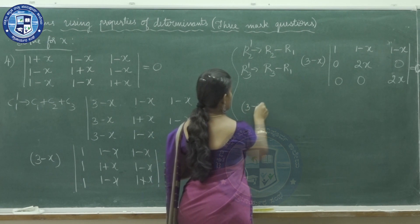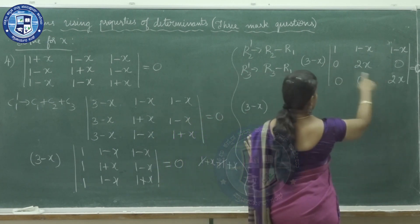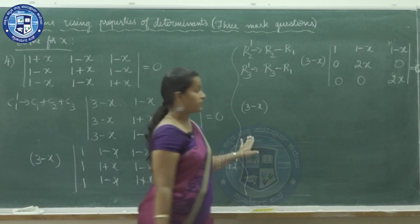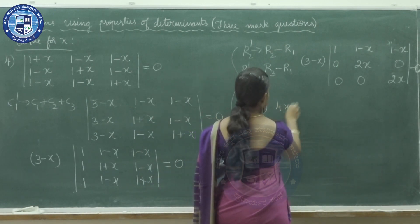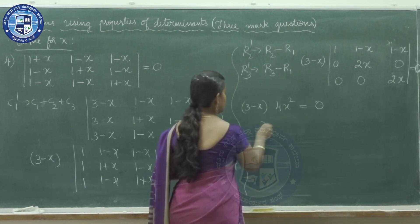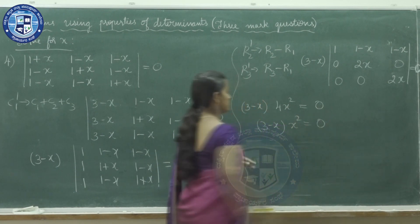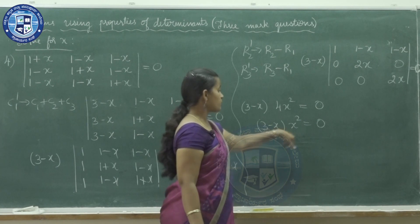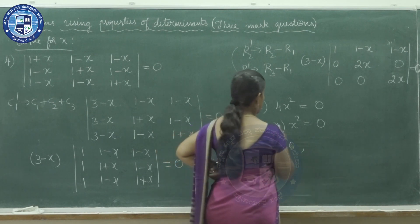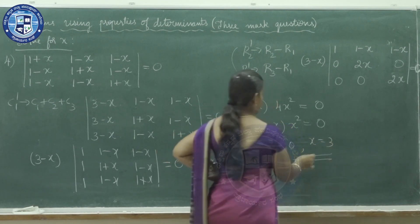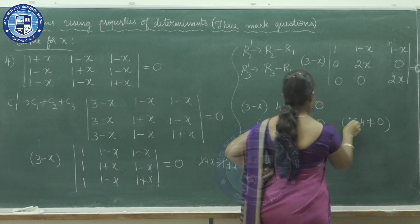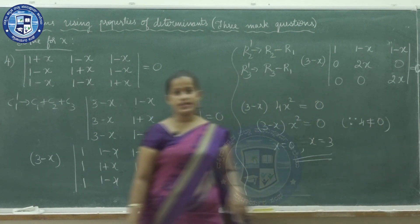The determinant equals the product of the principal diagonal elements: 1 × 2x × 2x = 4x². So (3−x) × 4x² = 0. Since 4 cannot equal 0, we need either x²=0, giving x=0, or 3−x=0, giving x=3. So x can take the values 0 and 3.